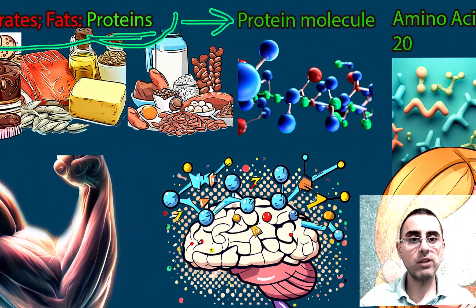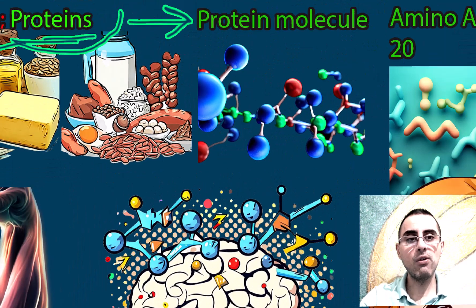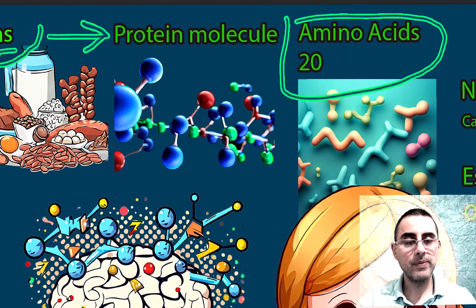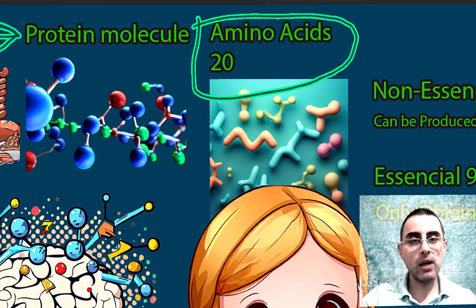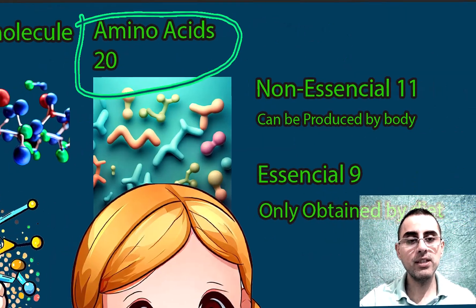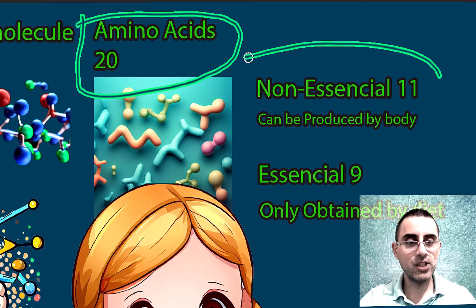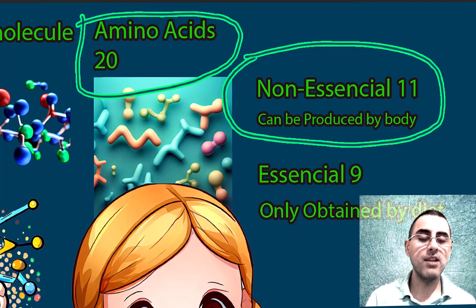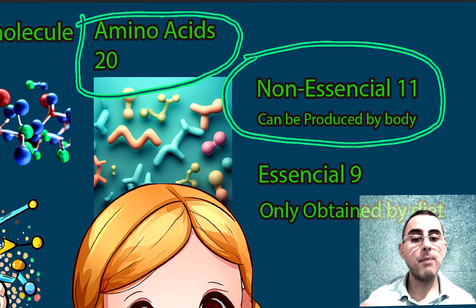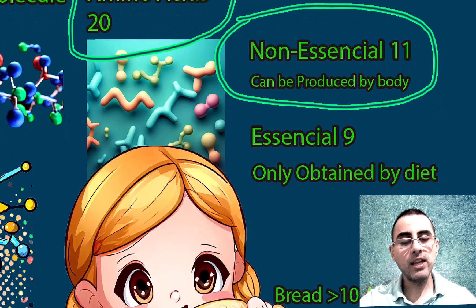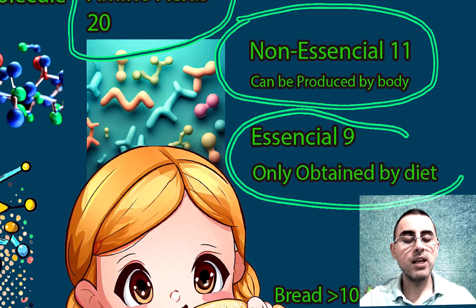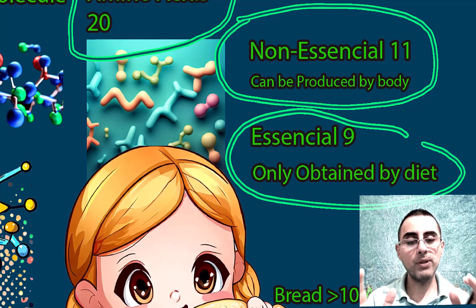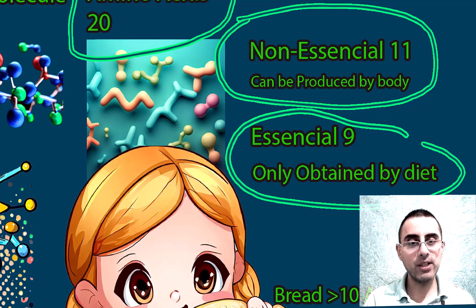Proteins are huge molecules and they consist of amino acids. We have 20 amino acids in total. Out of these 20 amino acids, 11 are non-essential — meaning our body can synthesize them. The remaining 9 are essential, meaning we must obtain them through our diet.